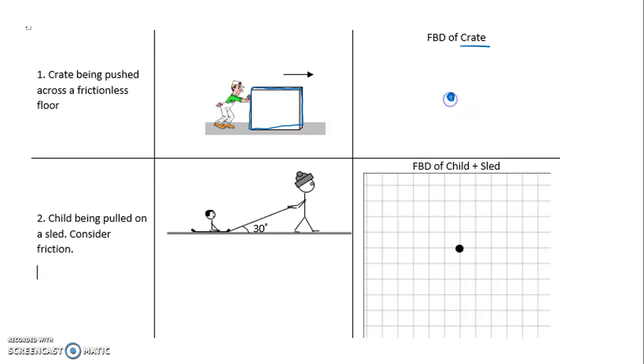Now there's one non-contact force that's acting here, also called a field force. You'll see this on almost every free body diagram. That is the weight or the force of gravity. So this could be represented as W or MG or FG. Any of those symbols are fine.